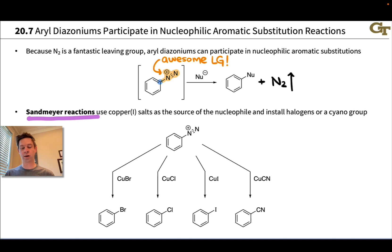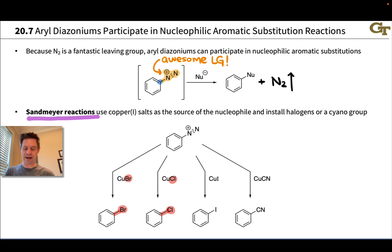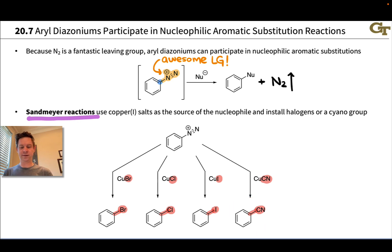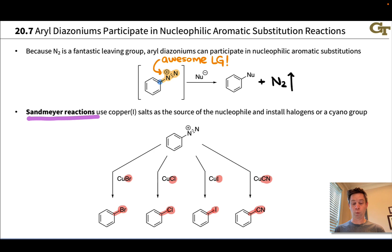We use as our nucleophile a copper(I) salt, and the group we install is either a halogen or a cyano group. If we use copper(I) bromide, Br⁻ displaces N2 and we get bromobenzene. Copper(I) chloride gives chlorobenzene; copper(I) iodide gives iodobenzene; and copper cyanide gives cyanobenzene. This last one is particularly notable because it's hard to imagine installing a cyano group any other way — this is a single-step direct route to cyanobenzene from the diazonium, which we know how to make via nitration, reduction to NH2, and diazotization using sodium nitrite and hydrochloric acid.